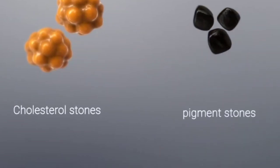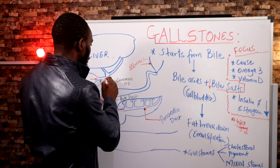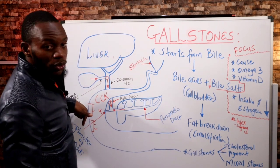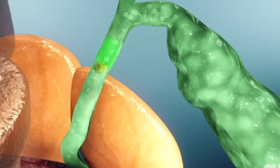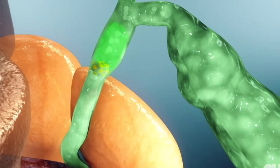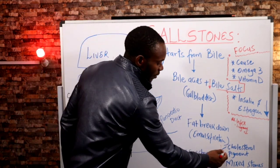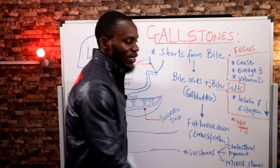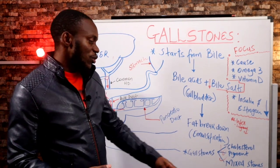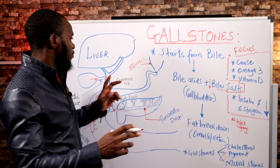The second type is pigment stones. From the liver we have bilirubin draining into the small intestine. If you block the common duct or bile duct, the bilirubin that should go into the stool cannot pass. It builds up, and once bilirubin accumulates you get yellow skin and yellow eyes — jaundice — and itchy skin. The third type is mixed stones, which can be both cholesterol and pigment stones coming together to form larger stones.